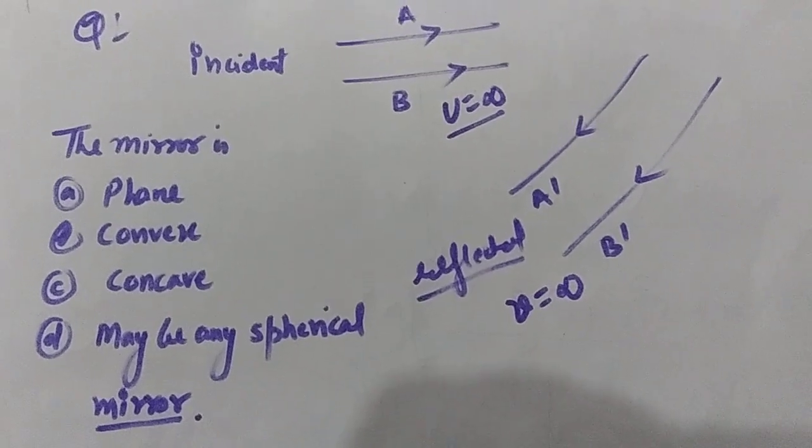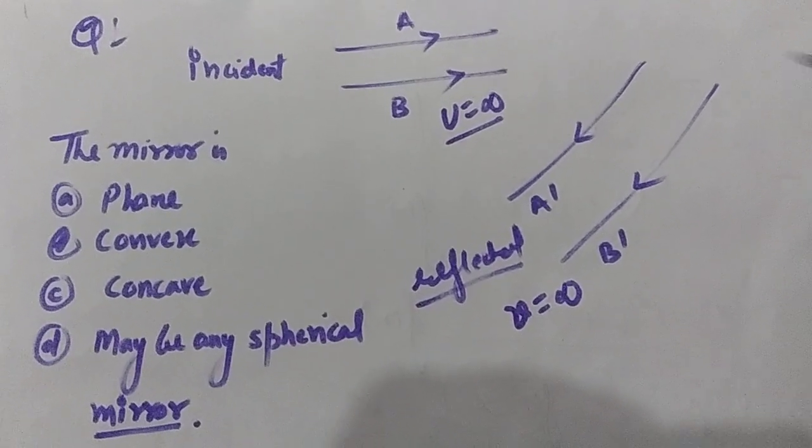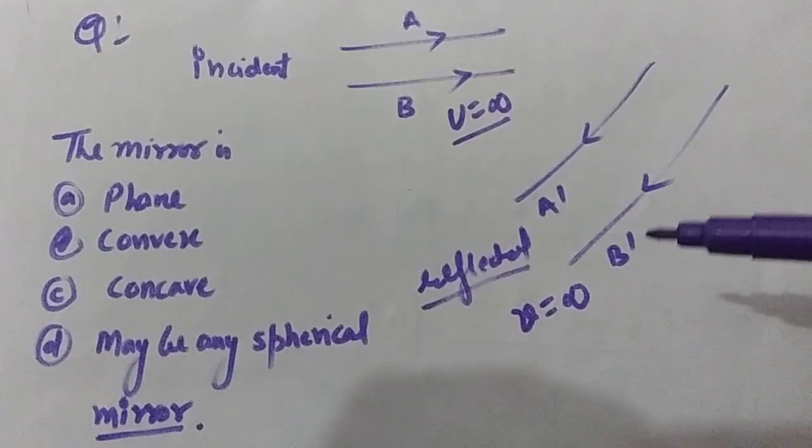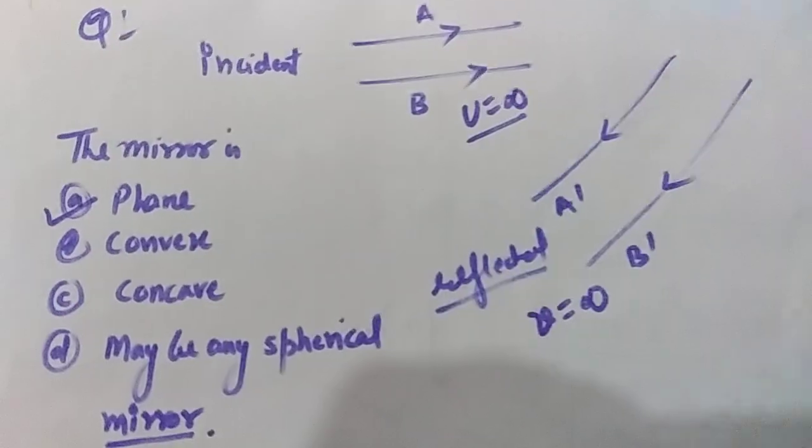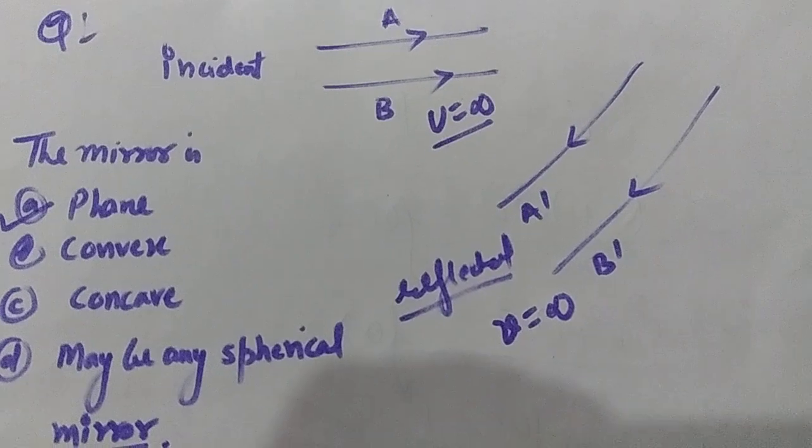Now the question is, what type of mirror is this? Students, as U is infinity and V is also infinity, it means that this is obviously a plane mirror. So the answer for this problem is plane mirror.